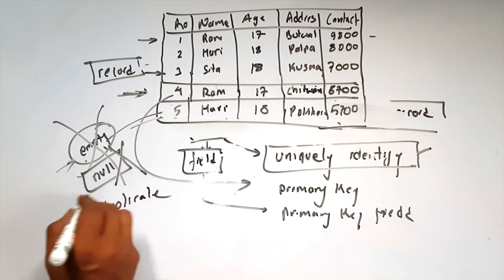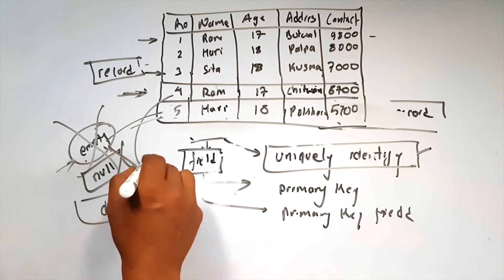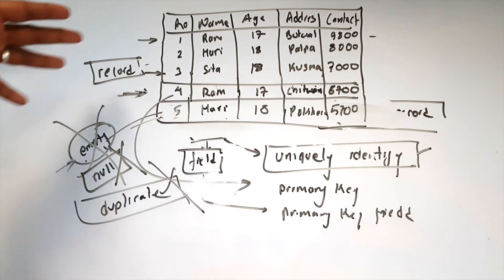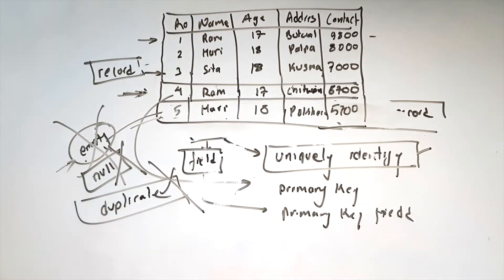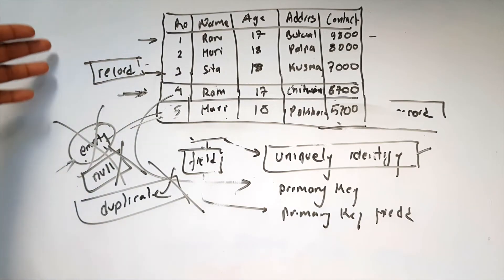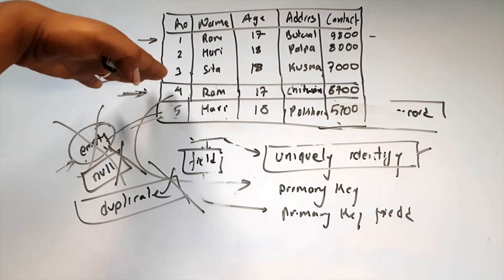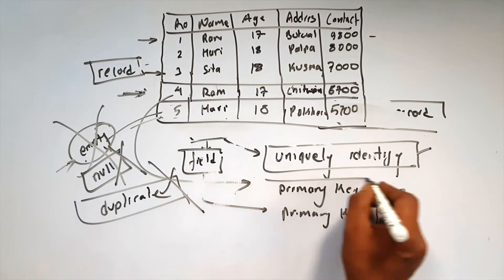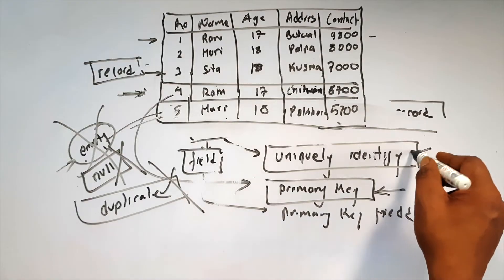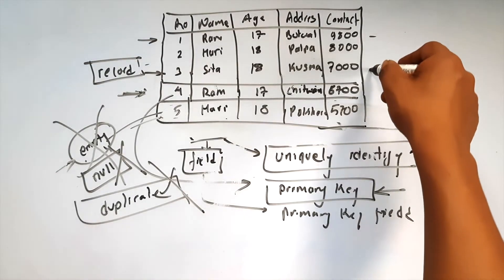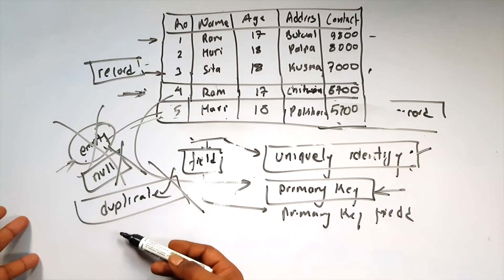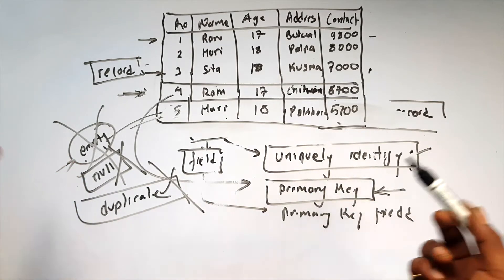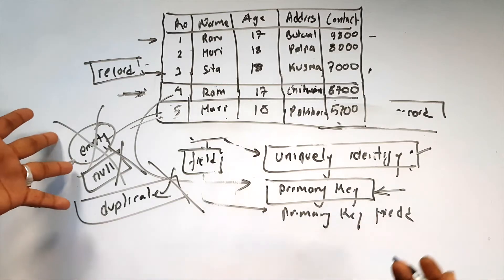The primary key should not have duplicate values. The concept of primary key is that the database table has many records, and the key field uniquely identifies each record from the given database table. It does not allow empty values and does not allow duplicate values — it does not accept null or empty values.